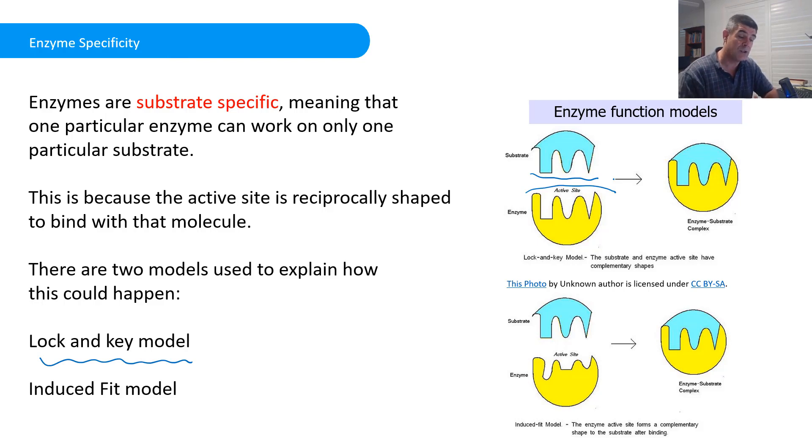That model was used successfully to explain things like the specificity of enzymes. Enzymes do catalyze particular reactions. A lock and key mechanism is a good explanation because it means if it's not right, if it doesn't fit perfectly, it won't work.